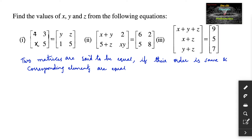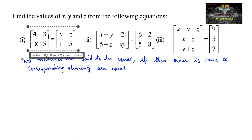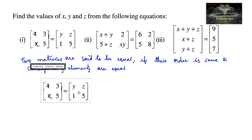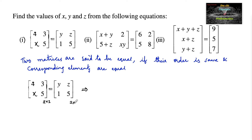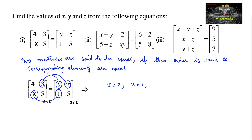Let us consider the first one. Here two matrices are equal — both are 2 by 2 matrices, so their orders are the same and corresponding elements must be equal. The corresponding element of 3 is z, so z is equal to 3. The corresponding element of x is 1, so x is equal to 1. The corresponding element of y is 4, so y is equal to 4. Therefore x is equal to 1, y is equal to 4, and z is equal to 3 in the first case.